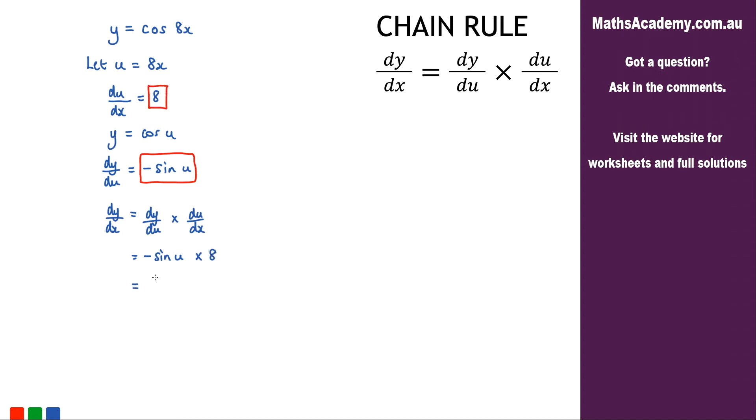We can go ahead and we can simplify things a little bit. We've got negative 8 sine of u. So dy by dx is equal to negative 8 sine. Now u, well, u is 8x. So we can pop that in there. And that is the final answer.